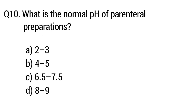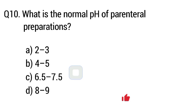Question number 10. What is the normal pH of parenteral preparations? The right answer is option C: 6.5 to 7.5.